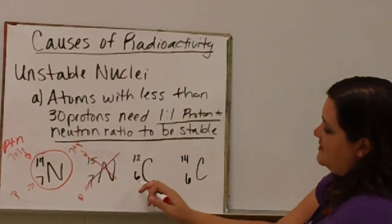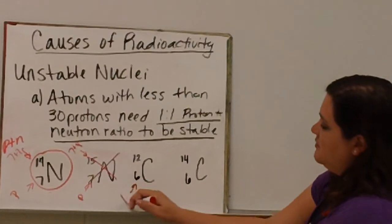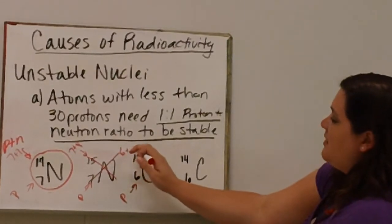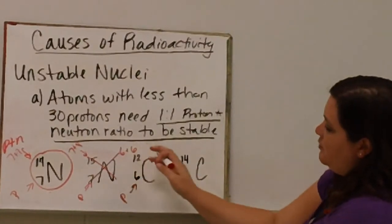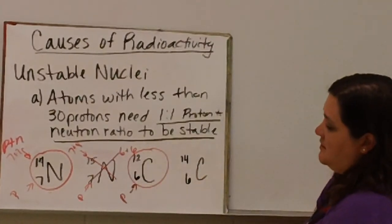Carbon-12 has six protons. And therefore, if it has six protons, to be a mass of 12, it has to have six neutrons. And so that is a one-to-one ratio. And so that is a stable nuclei.